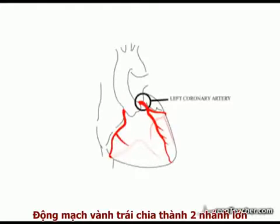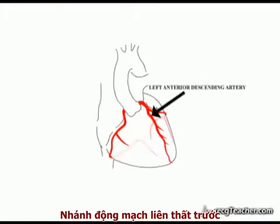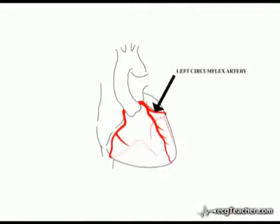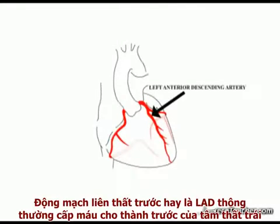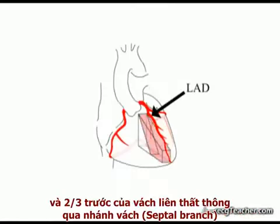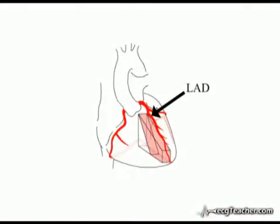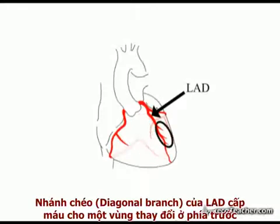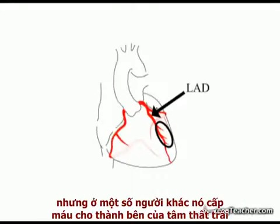The left coronary artery divides into two major branches: the left anterior descending artery and the left circumflex artery. The left anterior descending artery or LAD generally supplies the anterior surface of the ventricles and the anterior two-thirds of the interventricular septum through septal branches. Diagonal branches of the LAD supply a variable extent of the anterior and, in some individuals, lateral surface of the left ventricle.